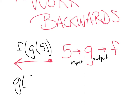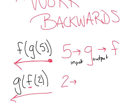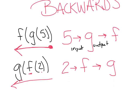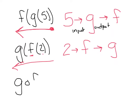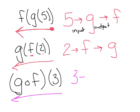If I said G of F of 2, going backwards: I take 2 into F, and take that output into G. Likewise with the composition sign — G composed of F of 3: still going backwards, 3 into F first, then that output into G. Remember, work backwards.